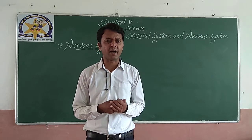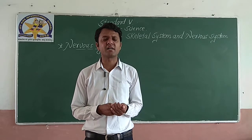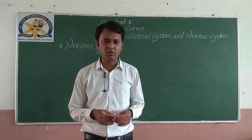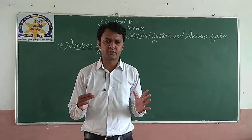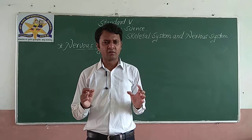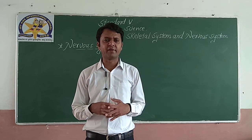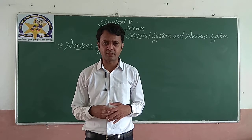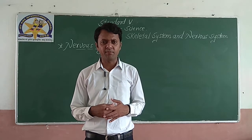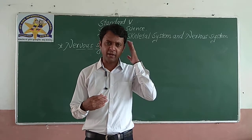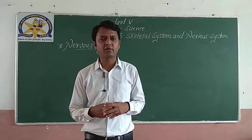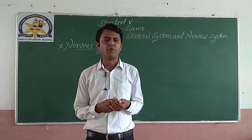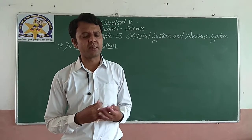Let us discuss the nervous system and its parts. The nervous system consists of three parts: brain, spinal cord, and nerves.